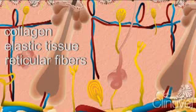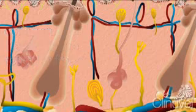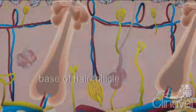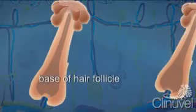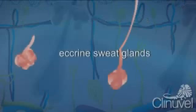Collagen is responsible for the strength of the skin and holding skin tissue together like glue. There are also specialised cells and glands within the dermis, including the bases of hair follicles, sebaceous glands responsible for producing sebum or oil, and eccrine sweat glands which produce sweat.